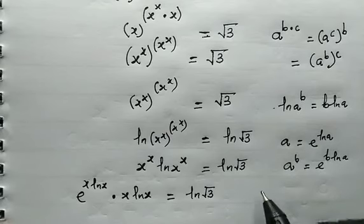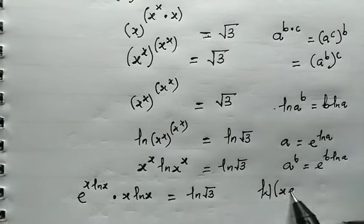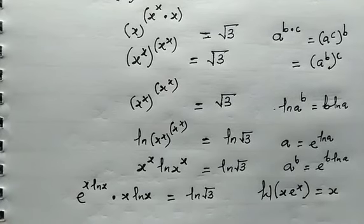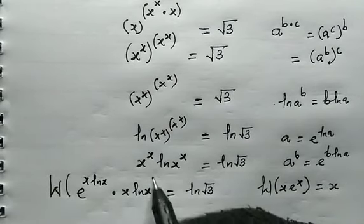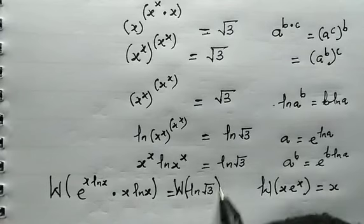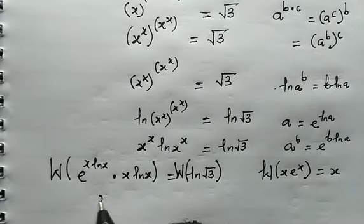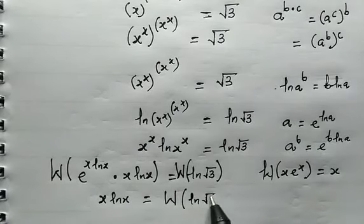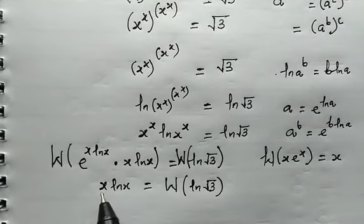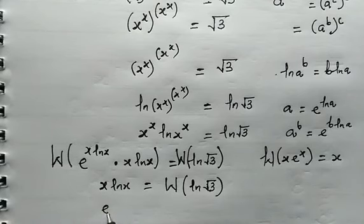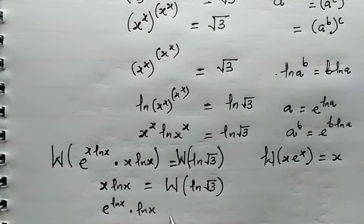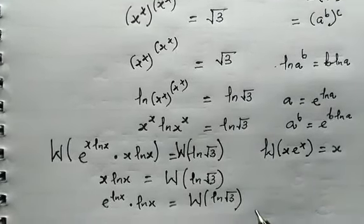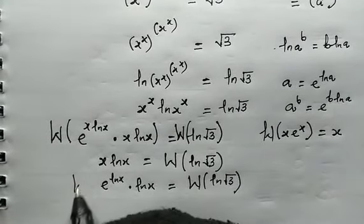From here, we can make use of the Lambert W function. Remember that the Lambert W function with argument x times e to the power of x — where the power of e and the coefficient are equal — simplifies to just x. When we take the Lambert W function on both sides, the left-hand side simplifies to x times the natural log of x, which equals W of the natural log of root 3. Now this x can be rewritten as e to the power of natural log of x, multiplied by the natural log of x, equal to W of the natural log of root 3. From here, we can take the Lambert W function on both sides again.